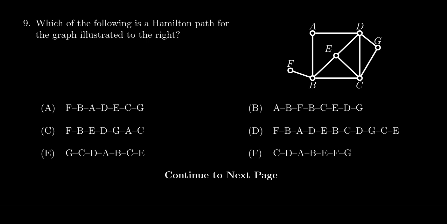So that gets rid of some options here. Choice A starts with F, so that might work. Choice B does not. It starts with A ends with G, so that doesn't work. This one starts with F, so maybe. This one starts with F, maybe. This one starts with G ends with E, so that can't be choice E. This one starts with C, it ends with G, so that one can't be it.